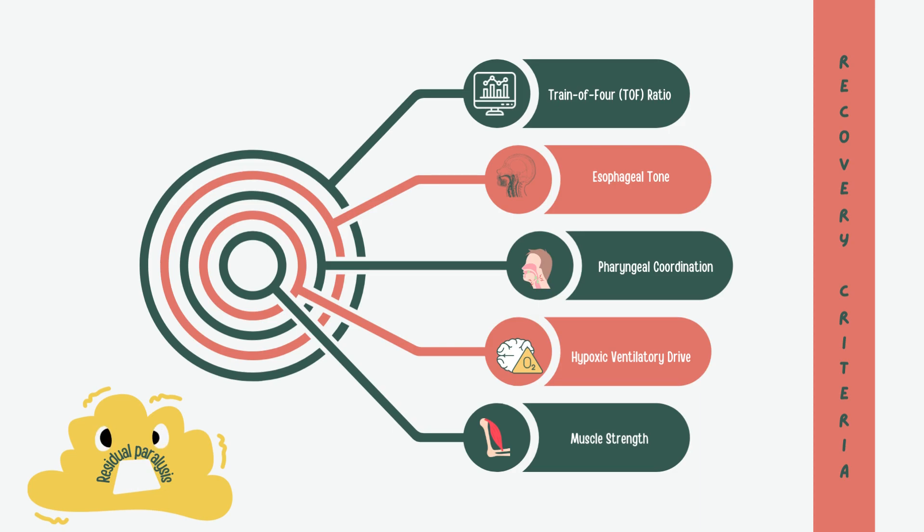Next, we have the restoration of esophageal tone. This is crucial for normal swallowing and preventing aspiration. Picture it as the muscles in the esophagus coming back to life. Then, there's pharyngeal coordination. Recovery should ensure proper coordination for speech and swallowing. Imagine those muscles synchronizing perfectly.